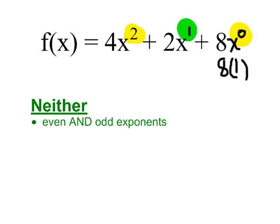Don't be confused by the coefficients all being even. 4, 2, and 8 are even, but we don't care about the coefficients, we only care about the exponents. And 2 is even, 0 is even, but 1 is odd. So this is neither even nor odd.